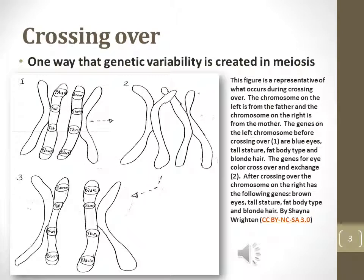Crossing over defines sexual reproduction and is the reason for the added benefit of sexual reproduction of population genetic diversity. During prophase 1, two pairs of chromosomes, one from each parent, come together to form a tetrad.